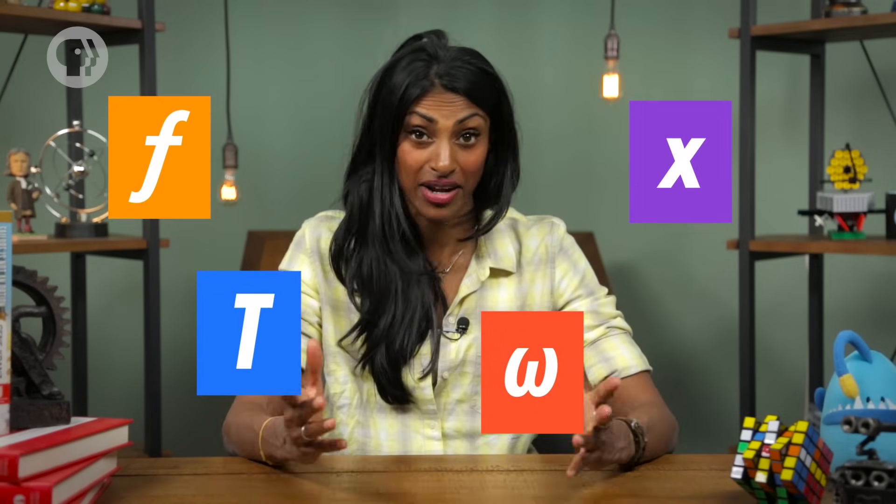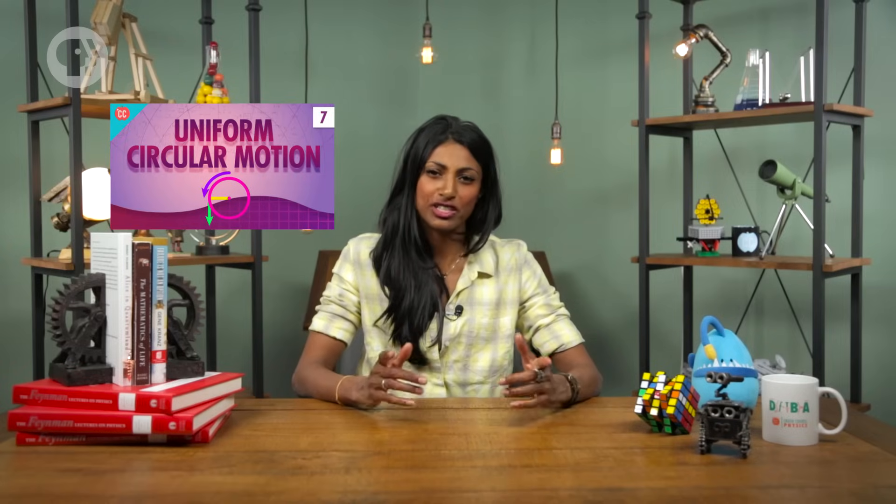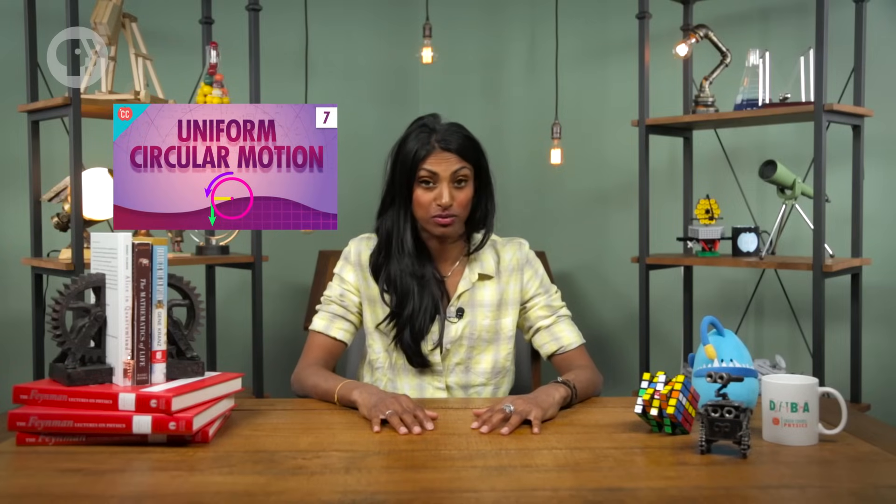But there's a lot more going on with this ball than just its energy and velocity. It also has properties like period, frequency, and angular velocity, plus its position changes with time. You might recognize those terms because we already talked about them in our episode on uniform circular motion. And that's no coincidence! Simple harmonic motion is actually a lot like uniform circular motion, mathematically speaking.